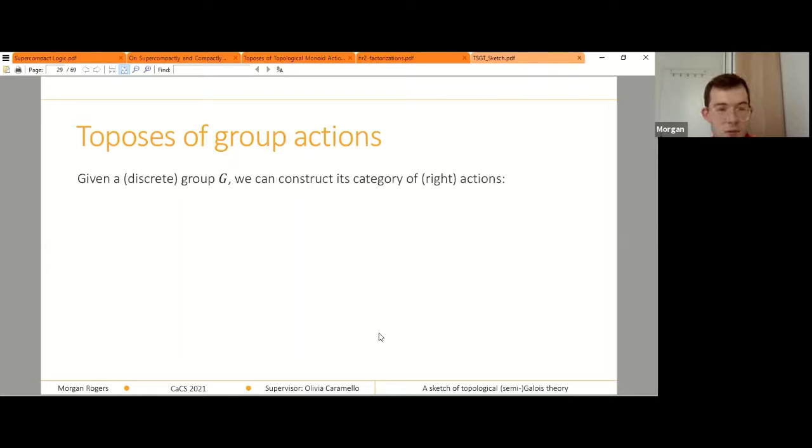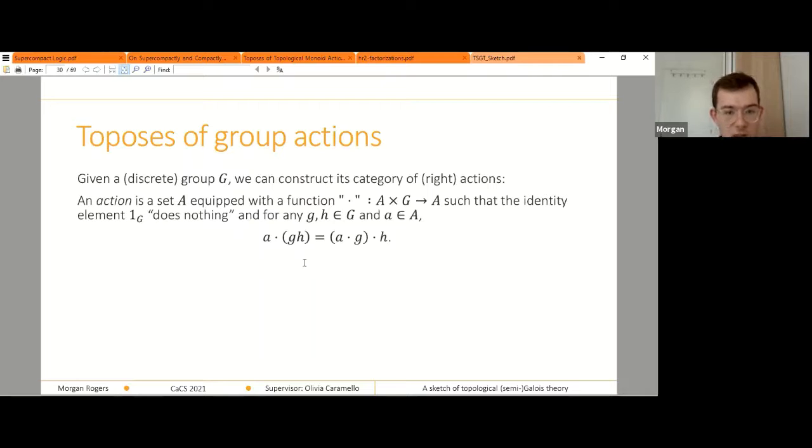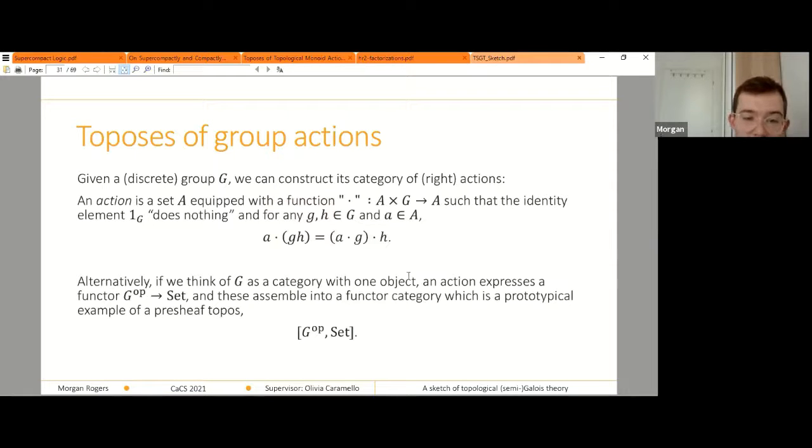So here's a nice example, and the examples that we'll be focusing on. So given a discrete group, we can construct this category of right actions. Actions look like this. Hopefully you're familiar with those if you've done some algebra at some point. But we can alternatively think of a group as a one object category and then an action as a functor and these assemble into a functor category, which is an example of a presheaf topos. If this is your first time seeing this fact, then go away and work out why it's true. Why, for example, natural transformations between these correspond to G-set homomorphisms.